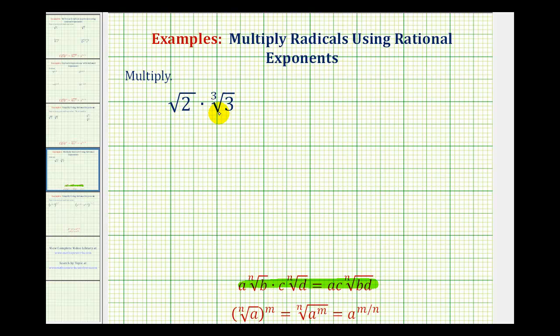So in order to find a common index, it'll be helpful to write these radicals using rational exponents. So for the square root of two, remember the index would be two and the exponent on the two would be one, as well as the exponent on this three. So we can rewrite this using rational exponents as two to the one-half power times three to the one-third power.